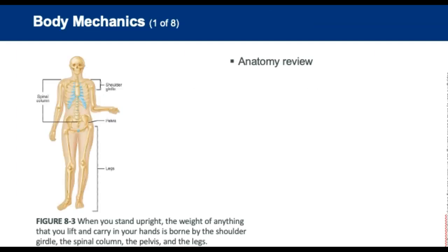Let's talk about body mechanics, starting with a quick anatomy review. When you are standing upright, the vertebrae are stacked on top of each other and aligned over the sacrum. The sacrum is both the mechanical weight-bearing base of the spinal column and the fused central-posterior section of the pelvic girdle. Body mechanics refers to the relationship between the body's anatomic structures and the physical forces associated with lifting, moving, and carrying. Very little strain occurs when the spinal column remains in alignment.